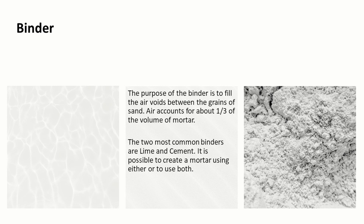The binder — the thing that you might think of as cement — is really there to fill the air voids between the grains of sand. If we looked at that sand under a microscope we would see lots of little circular grains with airspace between them, and the purpose of a binder is to fill that space. We talk about a well-filled mortar as something that gets rid of all those air spaces. In a typical volume of sand, air pockets might account for about a third of that volume. The two most common binders are lime and cement, and it's possible to use either or both of them mixed together.